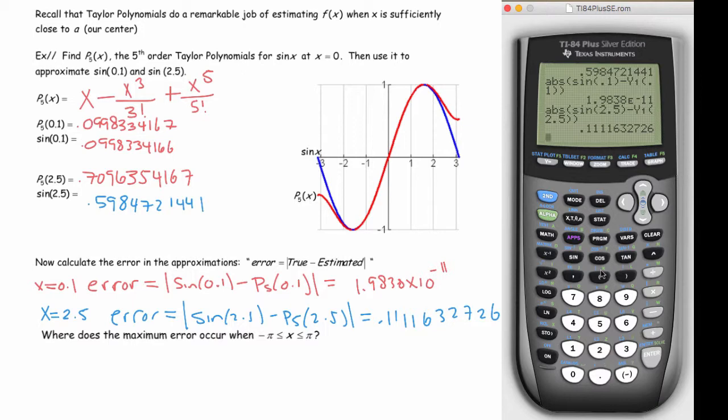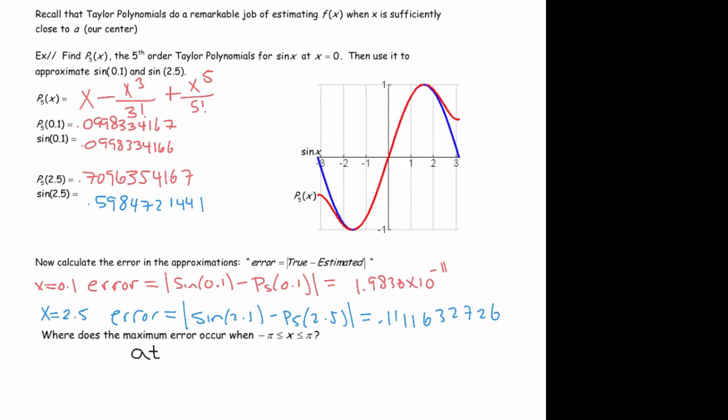So where does the maximum error occur when x is in between negative pi and pi? Hopefully you've reasoned that it's definitely going to be at pi and negative pi. Right? Because those two values are farthest from zero. And the approximation gets worse and worse as you move away from zero. So at x equals pi and negative pi.